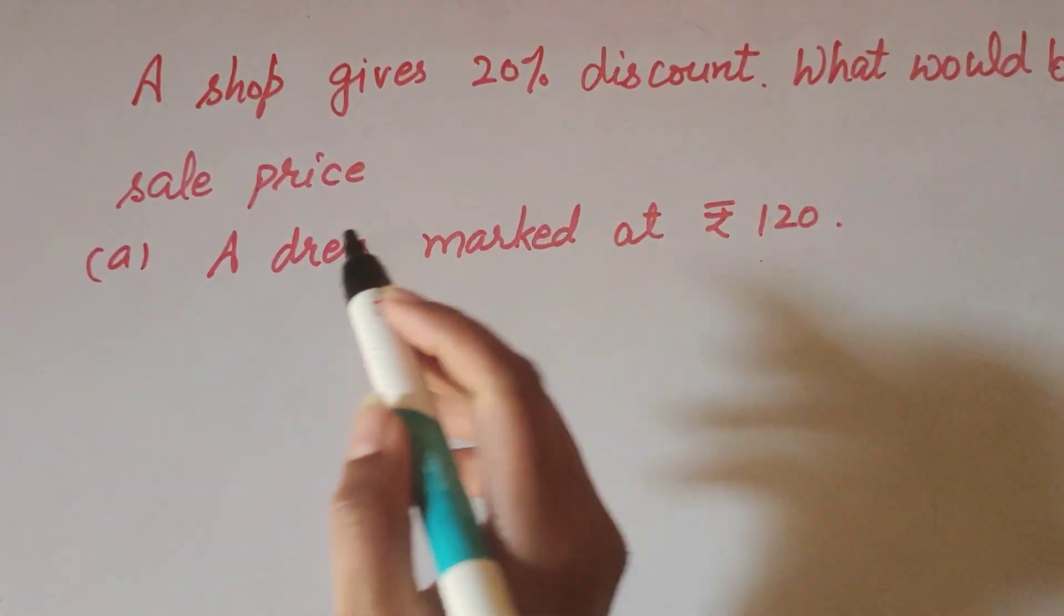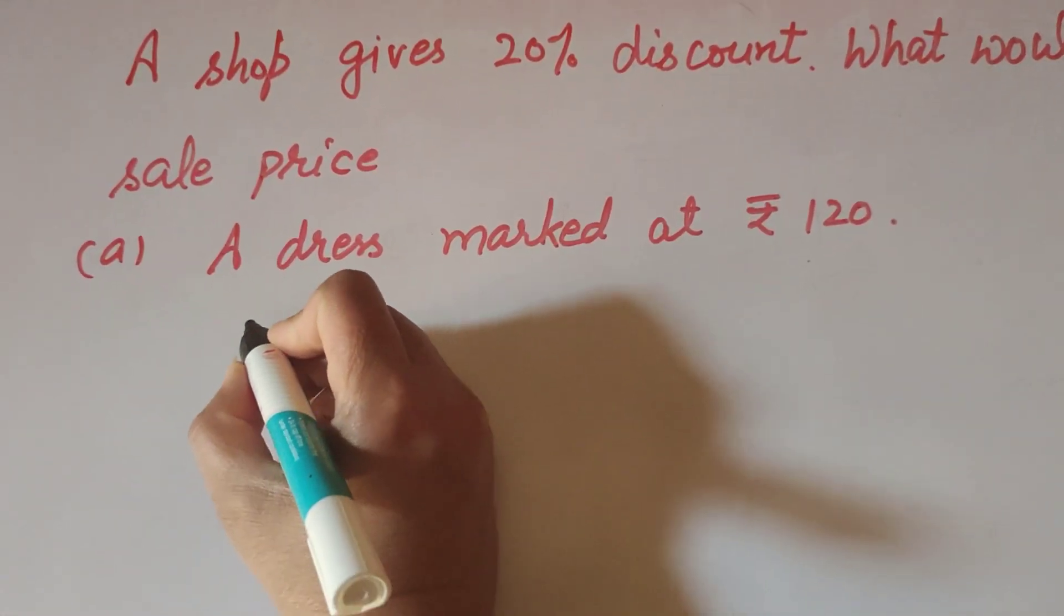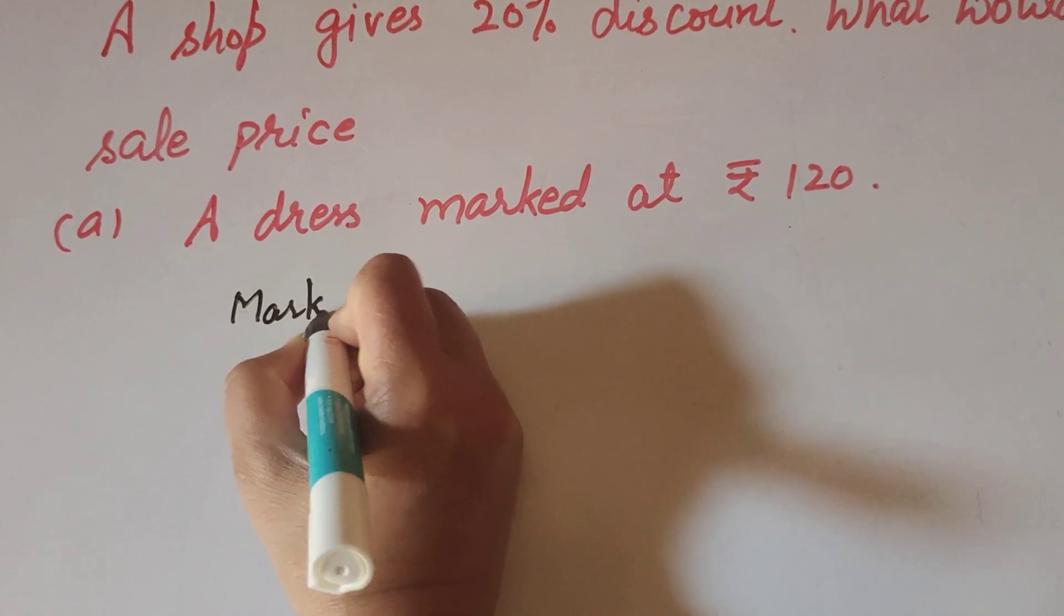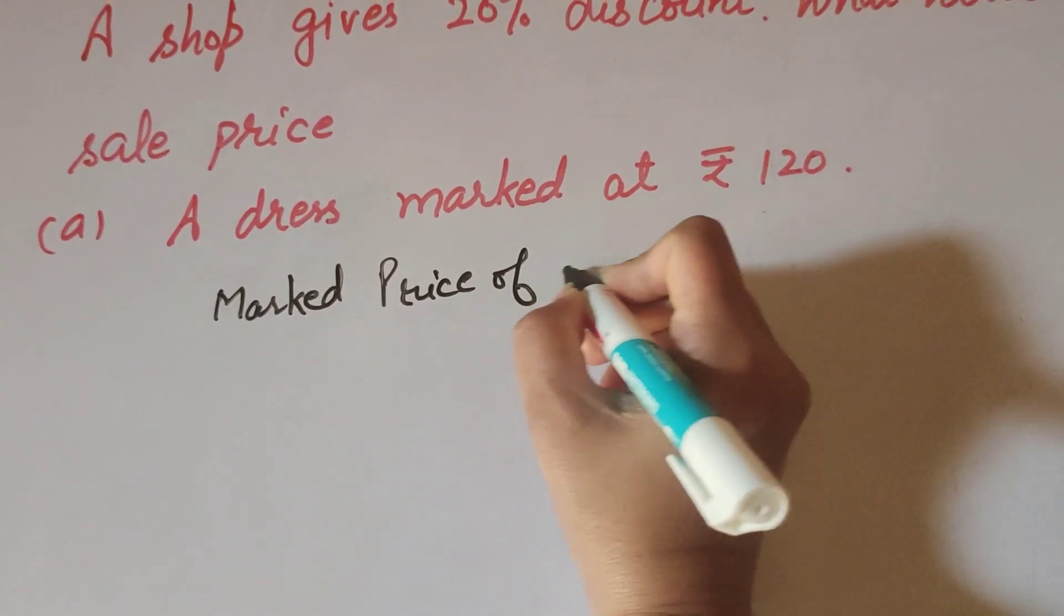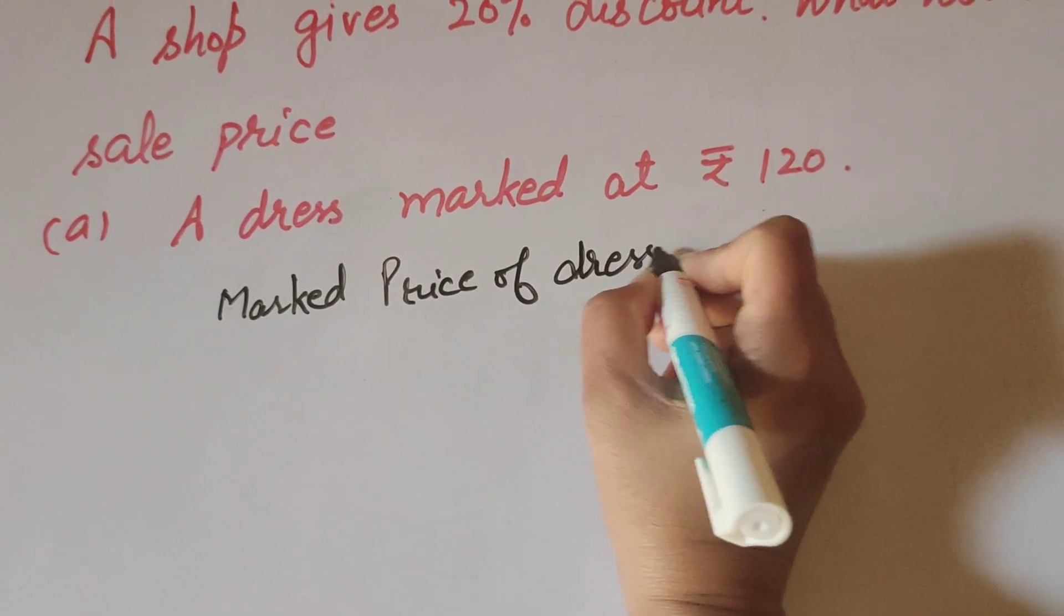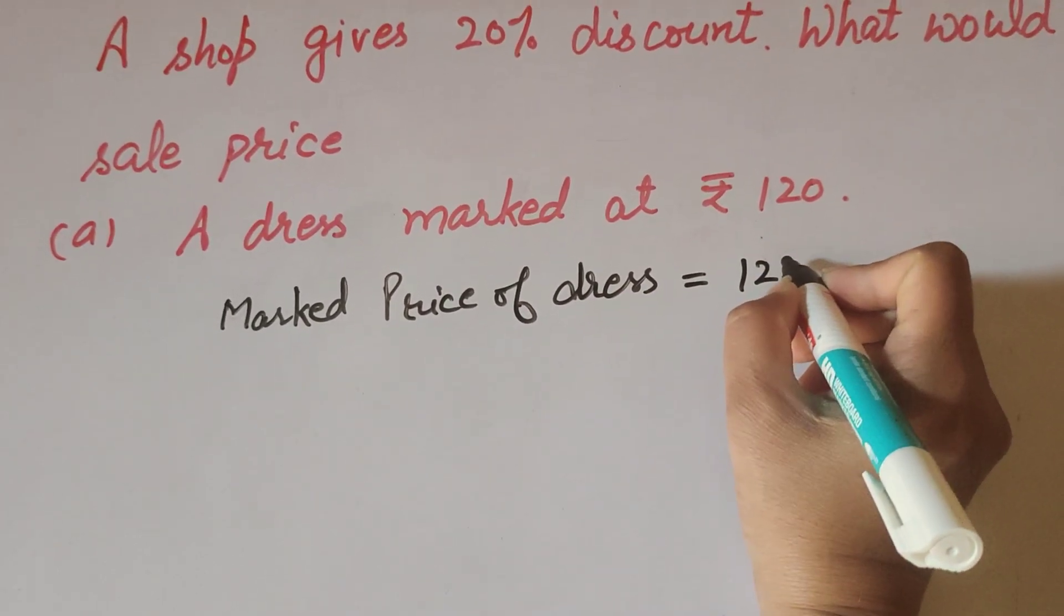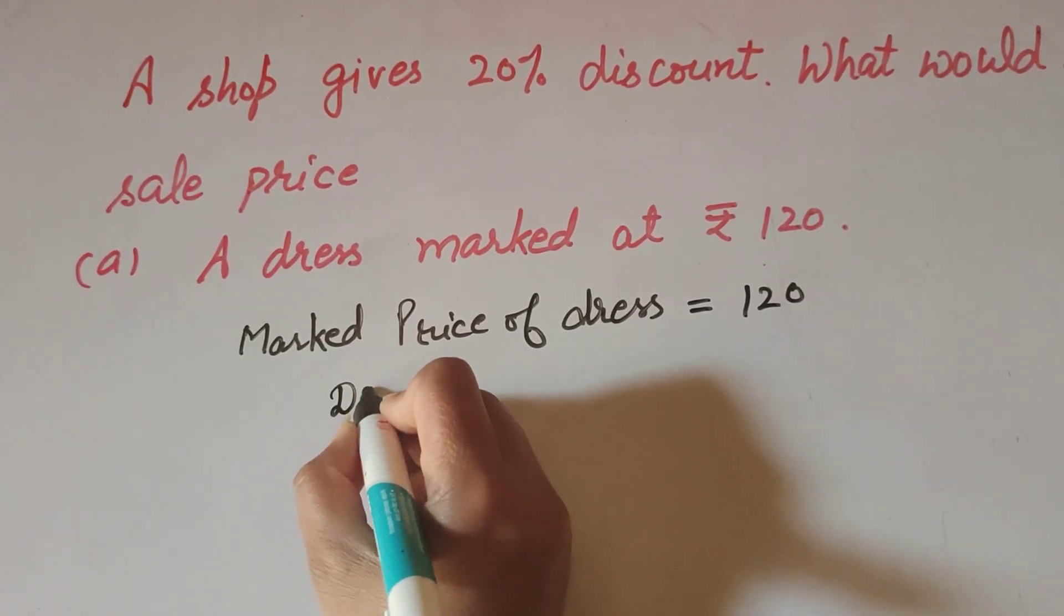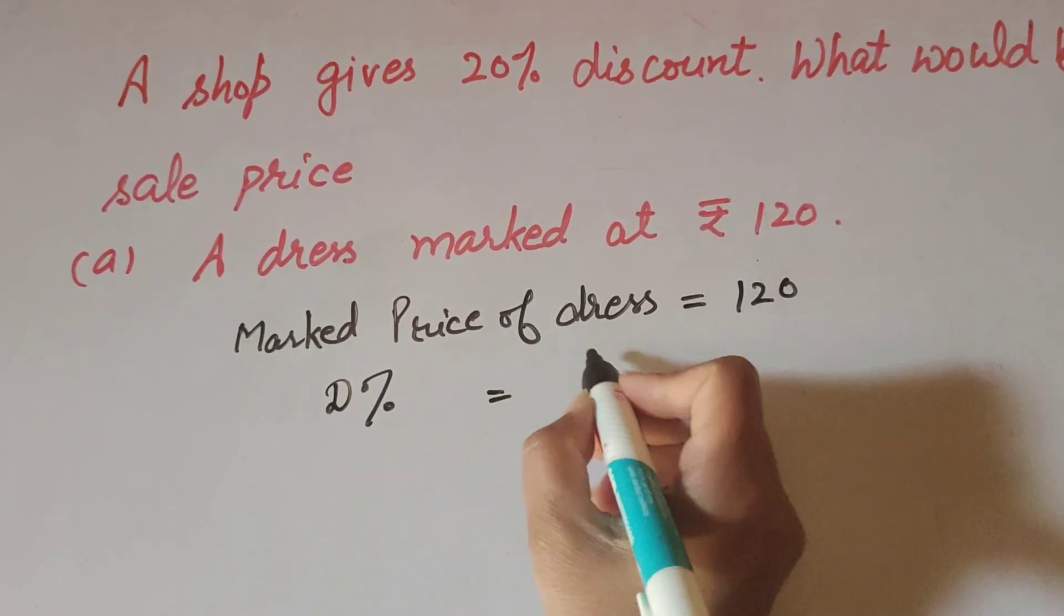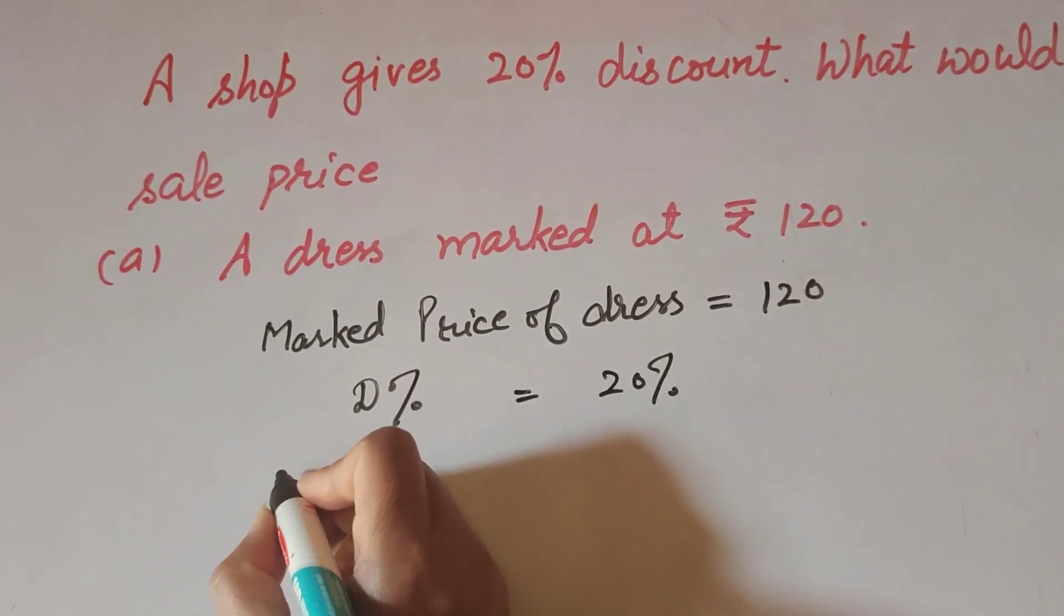of the item, 20% discount, and sale price we find. So let's start. Marked price of dress is equal to Rs 120, it is given. And discount percentage also given, it is equal to 20%.